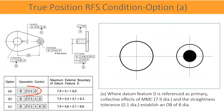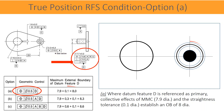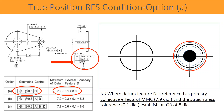Let us find the MMB boundary of the primary datum feature. The smallest diameter 7.5 millimeters is the least material boundary size. The maximum external MMB boundary of datum feature D is 7.9 millimeters. Where datum feature D is referenced as primary, the collective effects of MMC 7.9 millimeters diameter and the straightness tolerance 0.1 millimeters diameter establish an MMB external boundary of 8.0 millimeters diameter.